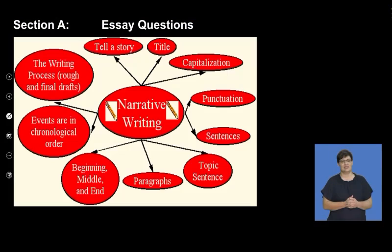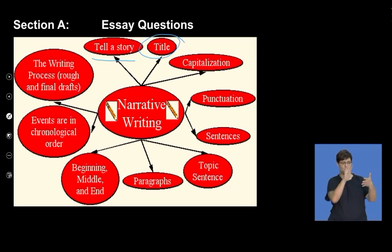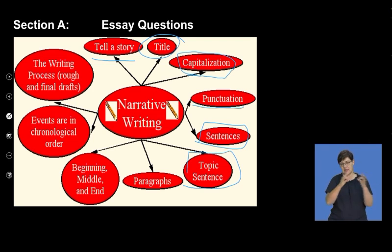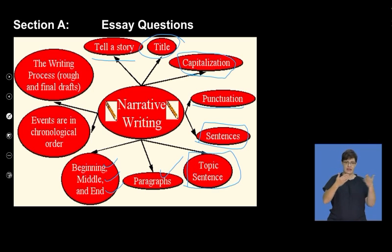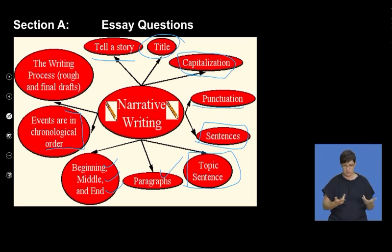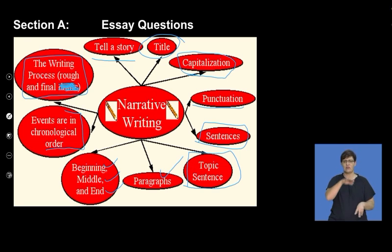Let's look at narrative writing or essay type writing. In a narrative question, we tell a story — you need your little title there. Remember capital letters: sentences should start with a capital letter and end with a full stop or relevant punctuation like an exclamation mark or question mark. Keep sentences simple, remember you need a topic sentence for each paragraph, and there needs to be paragraphs of main ideas. The story should have a beginning, a middle, and an end, and events should be chronological — there should be some sort of order. The writing process is very important, and there's no such thing as final drafts; we must have a final piece.